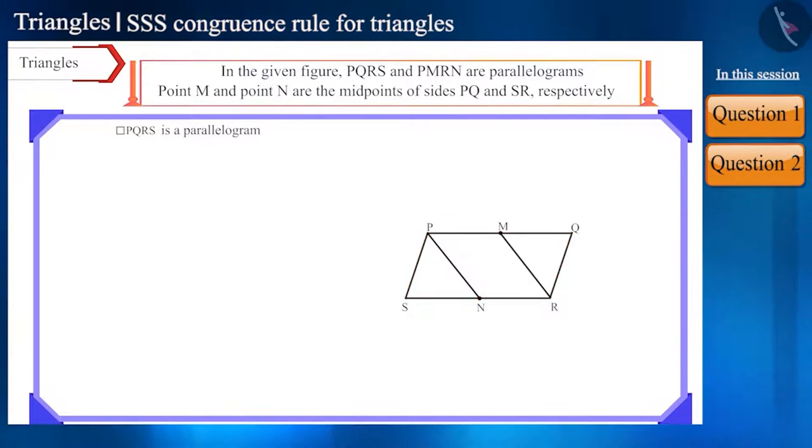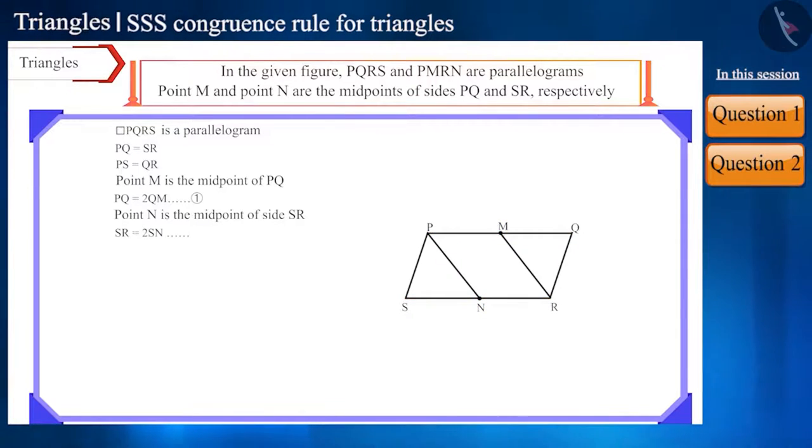Therefore, its opposite sides will be equal, which means side PQ and SR are equal and sides PS and QR are also equal. Point M is the midpoint of PQ, that's why we can write PQ like this. Point N is the midpoint of side SR, that's why we can write SR like this. As we saw, side PQ is equal to side SR. So these two will also be equal to each other.